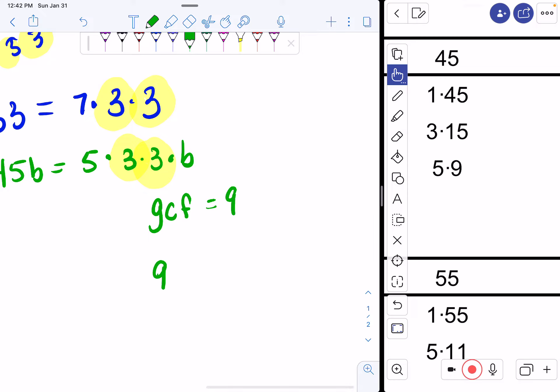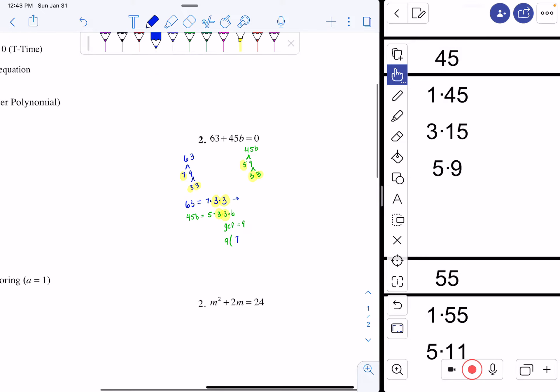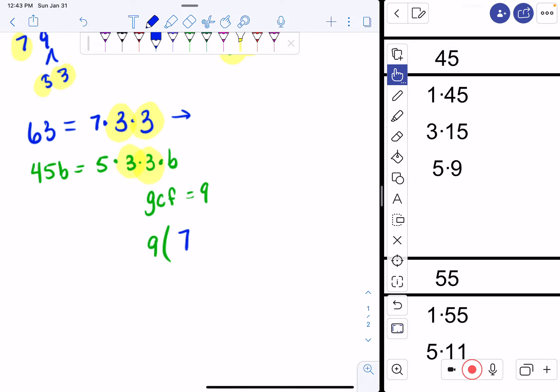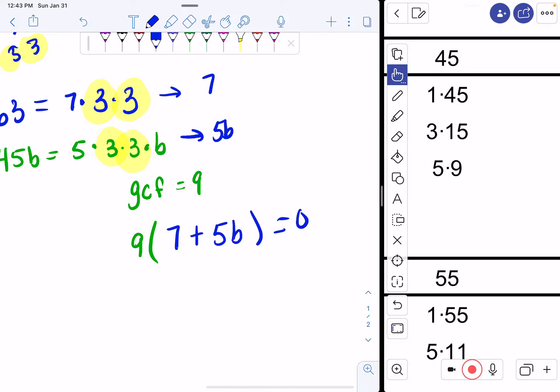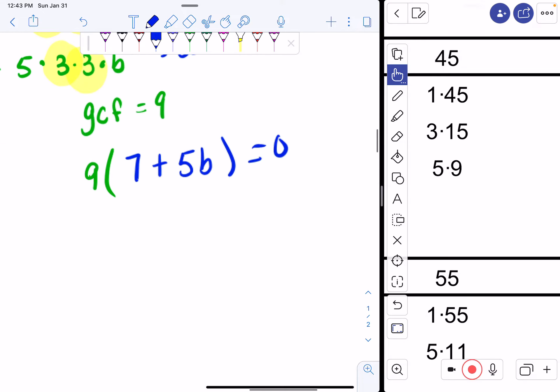So I have 9 parenthesis. My leftover is a 7. I have a positive 5b. And this is equal to 0. Now I do my t-time. And I set both factors equal to 0. I set 9 equal to 0. And I set 7 plus 5b equal to 0.